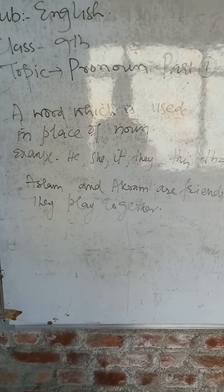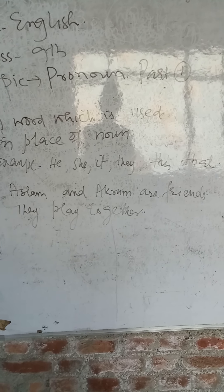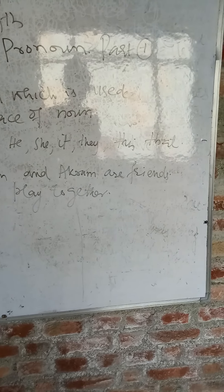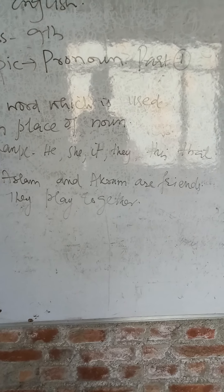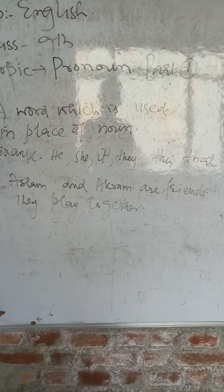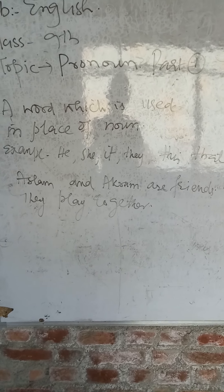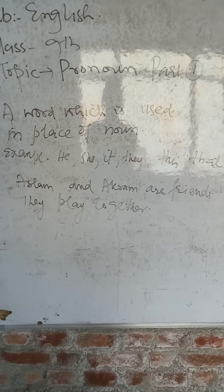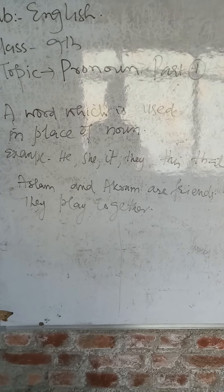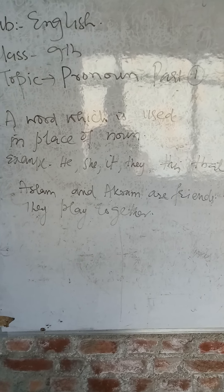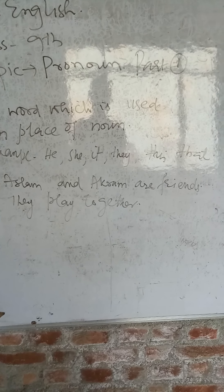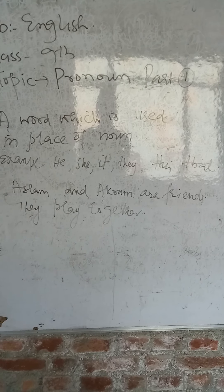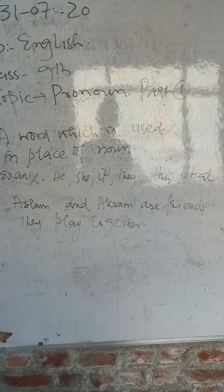So, pronoun is a word which is used in place of a noun. Examples: I, He, She, It, They, This, That, Them, Her, His — these are all called pronouns. For example, in the sentence 'Aslam and Akram are friends', in the next sentence instead of repeating their names we used 'They'. 'They' is a pronoun. This was all about the pronoun. I hope you have understood. Thank you.